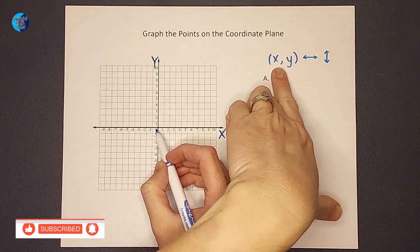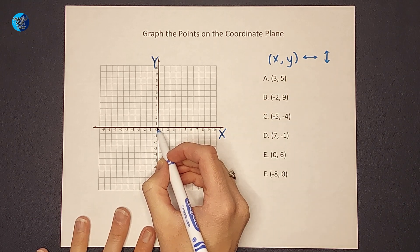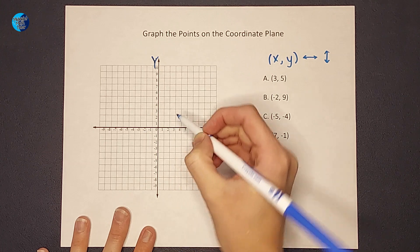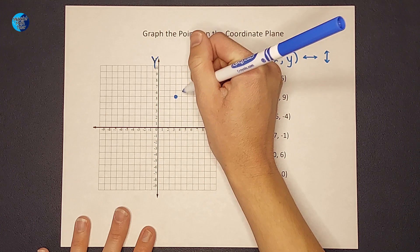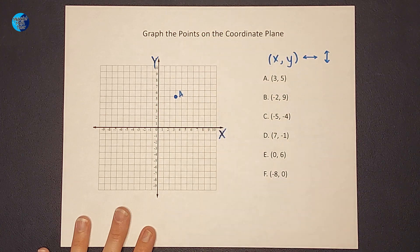Now doing x first and then y, I'm gonna go to the right 3 and up 1, 2, 3, 4, 5. And that is my point A.